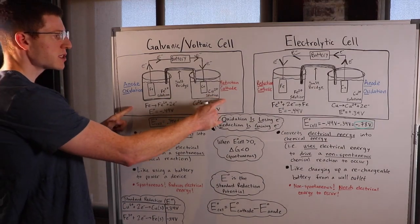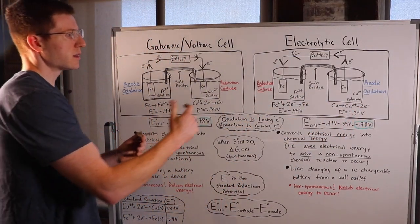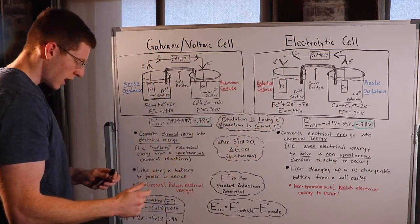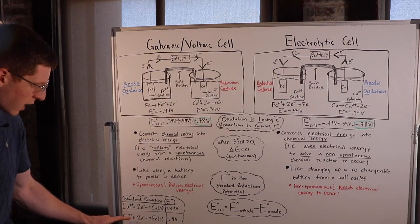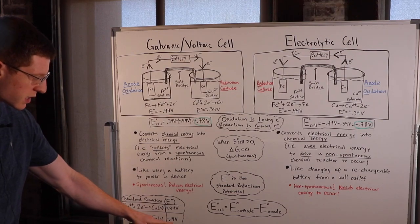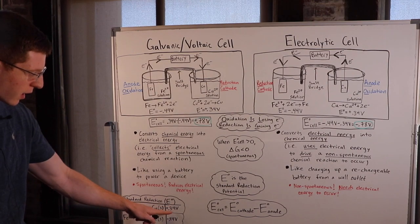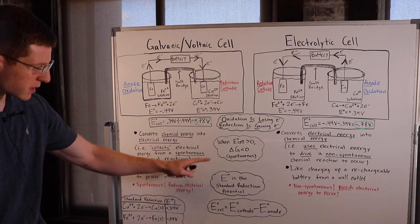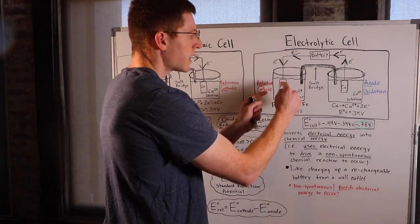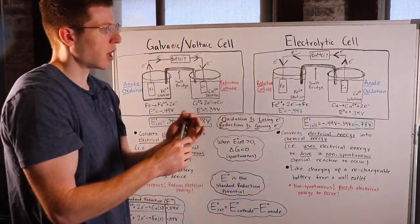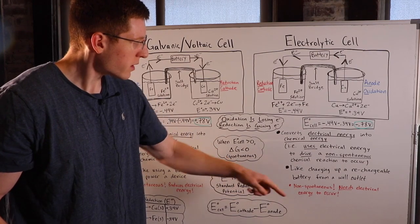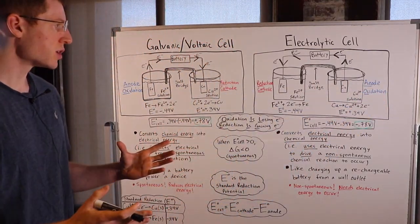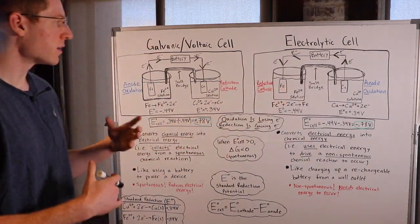We have the same setup as before, except the flow of electrons is reversed — now going from copper to iron. Iron has a natural tendency to not want to be reduced; it wants to be oxidized because it has a negative E naught. Copper has a positive voltage associated with its reduction, so it loves to get electrons and be reduced — positive E naught means negative delta G, which is spontaneous. So naturally electrons want to go to the copper, not the iron — that's why forcing them the other way is non-spontaneous. Reduction is still at the cathode and oxidation still at the anode, but now copper is the anode and iron is the cathode.